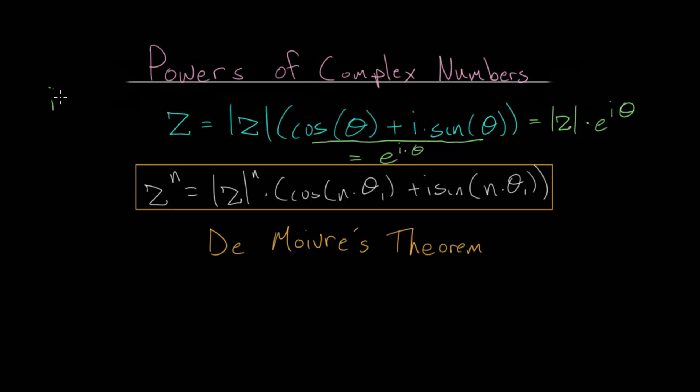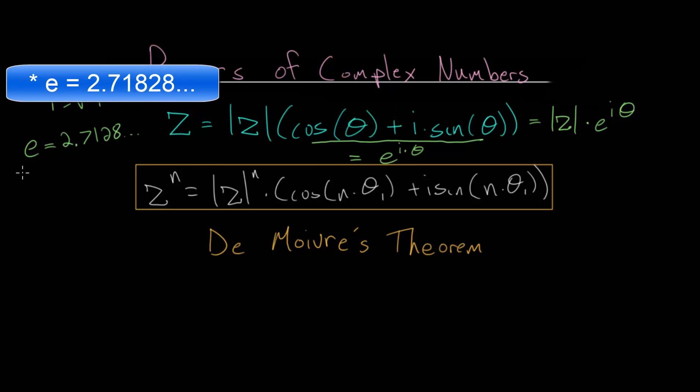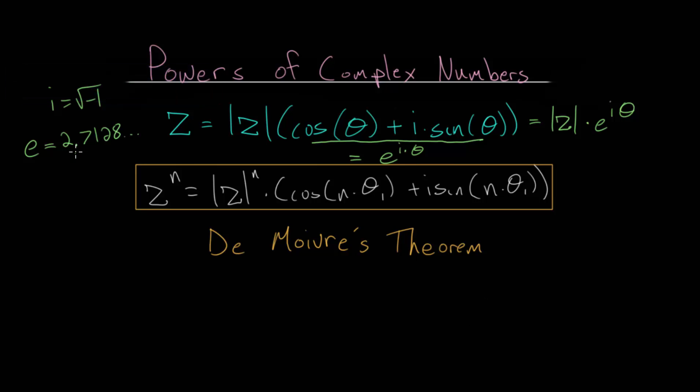Where we know that i is just the square root of minus 1, and e is the base of this exponential expression and is equal to 2.7128 and so on. It's an irrational number, so this goes on forever without a pattern. It is similar to the number pi in that regard.